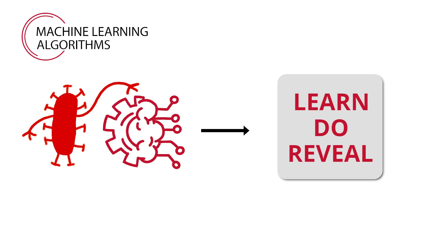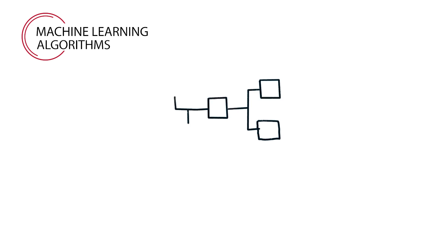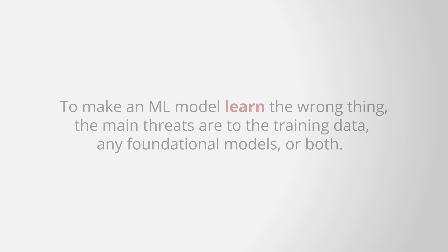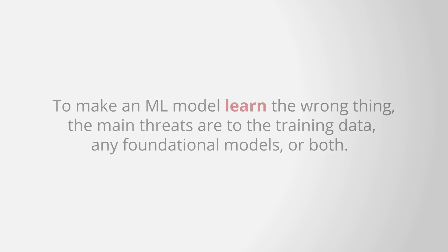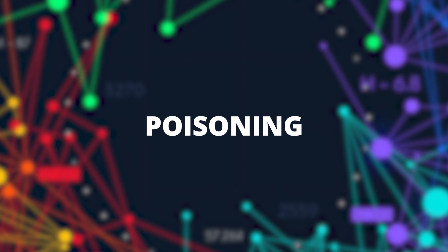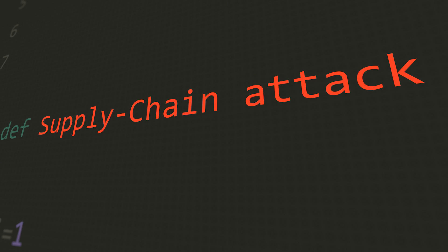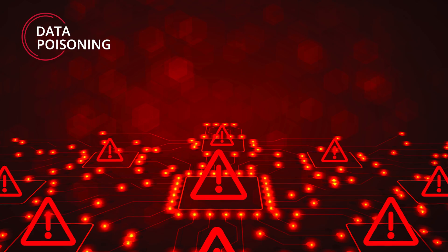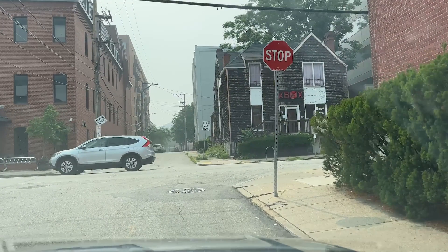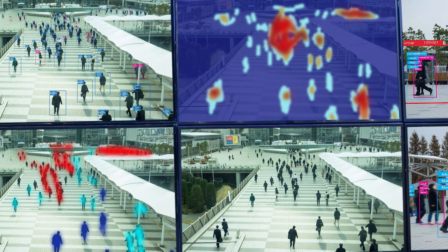By doing so, an adversary can force a machine learning system to learn the wrong thing, do the wrong thing, or reveal the wrong thing. To counter these actions, researchers break the spheres of influence an adversary can have into a simple taxonomy. To make an ML model learn the wrong thing, the main threats are to the training data, foundational models, or both. This class of vulnerabilities is encompassed by poisoning attacks — data and parameter manipulation that causes a model to incorrectly learn something the adversary can exploit later. An example is a supply chain attack where an attacker uses data poisoning to create a malicious model for classifying traffic signs. Triggers inserted into training data can influence future model behavior, as shown in the stop sign that classifies as a speed limit sign when the trigger is present.